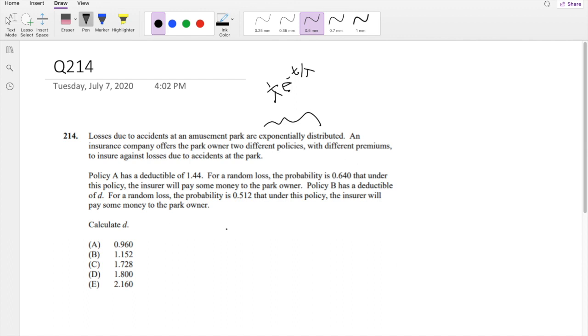And policy A has a deductible 1.44. Deductible 1.44. And for a random loss, the probability is 0.640 that under the policy, the insurer will pay some money to the owner.